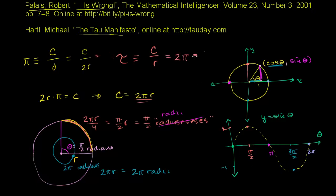Tau is 6.283185 and keeps going on and on and on, never repeating, just like pi. It's 2 times pi.